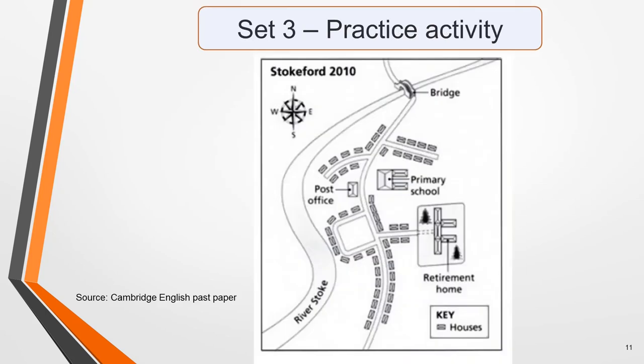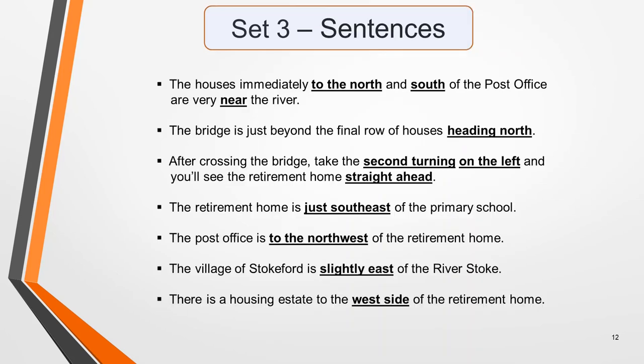Now listen to these sentences. The houses immediately to the North and South of the post office are very near the river. The bridge is just beyond the final row of houses heading North. After crossing the bridge, take the second turning on the left and you'll see the retirement home straight ahead. The retirement home is just South-East of the primary school. The post office is to the North-West of the retirement home. The village of Stokeford is slightly East of the River Stoke. There's a housing estate to the West side of the retirement home. Pause the video if you want to study them.